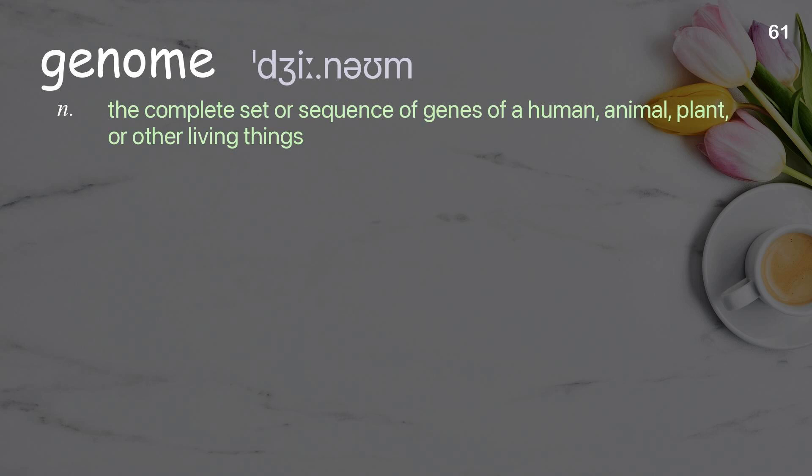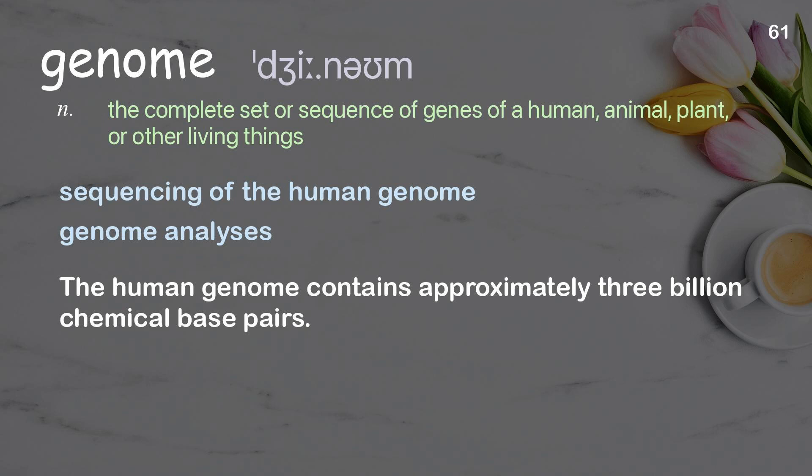Genome: the complete set or sequence of genes of a human, animal, plant, or other living things. Examples: sequencing of the human genome; genome analyses. The human genome contains approximately 3 billion chemical base pairs.